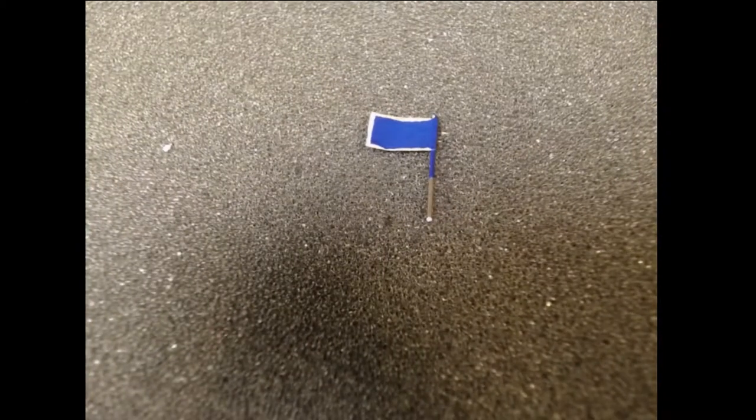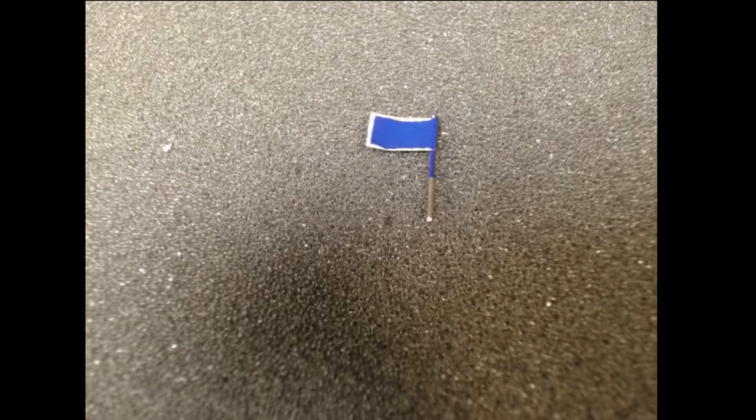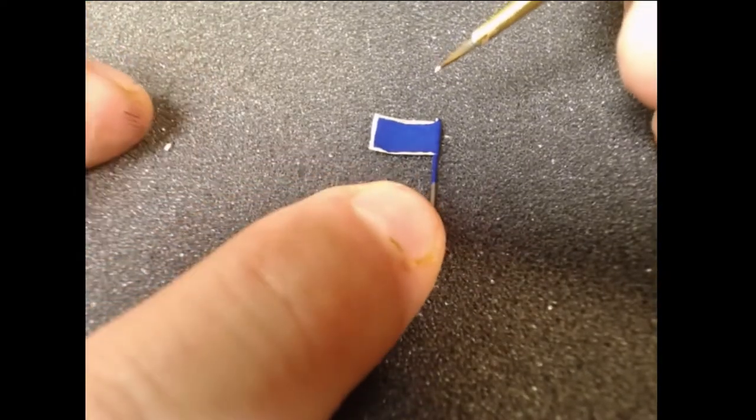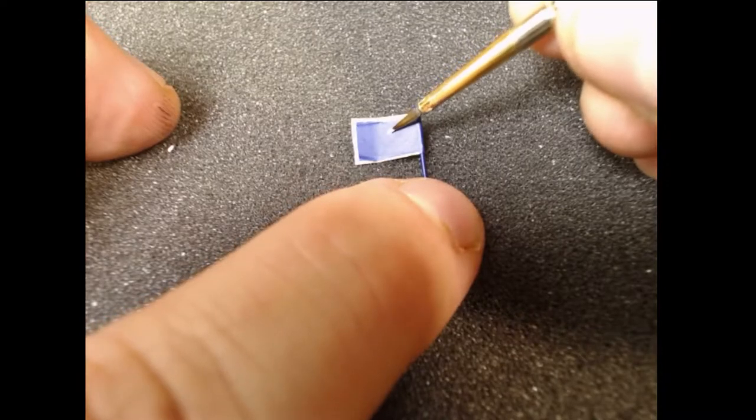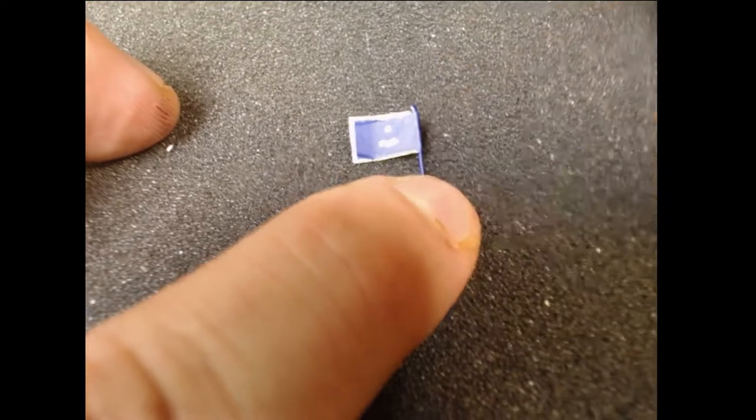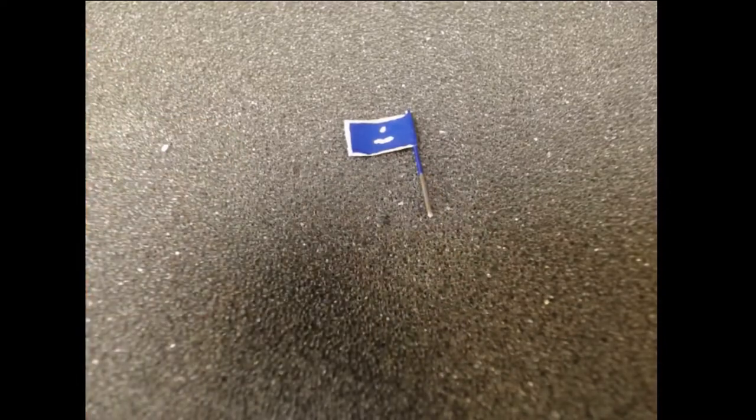And the next thing that you are going to need is a little bit of white and you are going to paint the bald eagle's head and then put a couple squiggles down there for the tail.